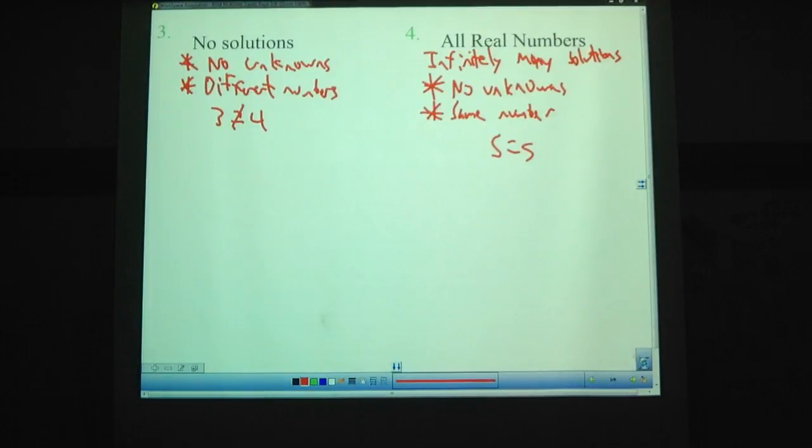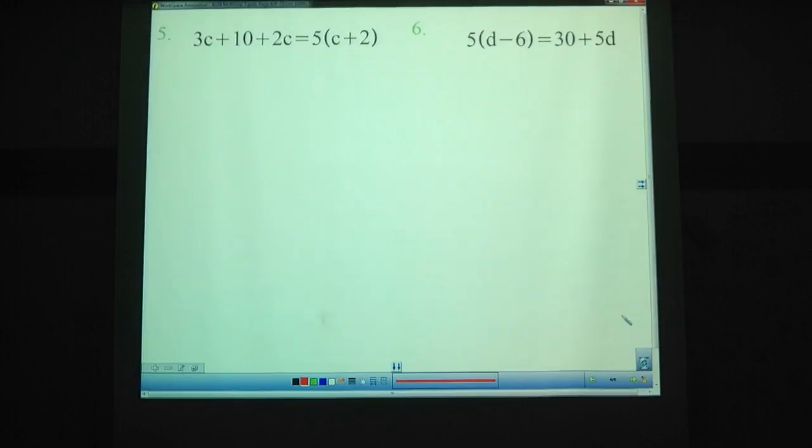So let's look at these in action. Try solving these equations. On each of them, you need to simplify one side or the other, at least possibly both sides, before you can solve. Pause the video. And we're back. Number 5, we've got 3c plus 10 plus 2c.